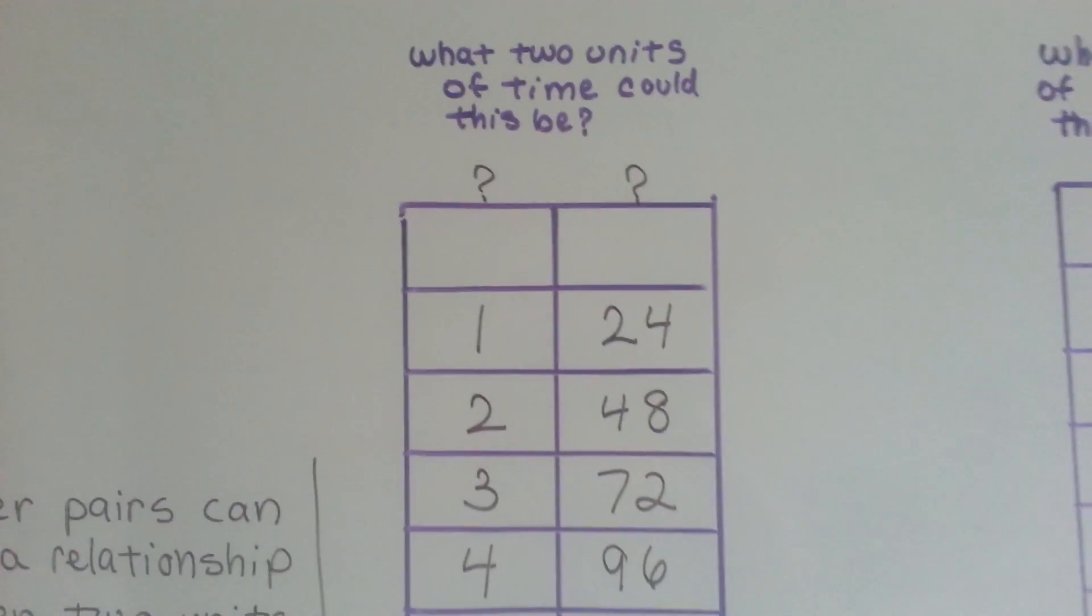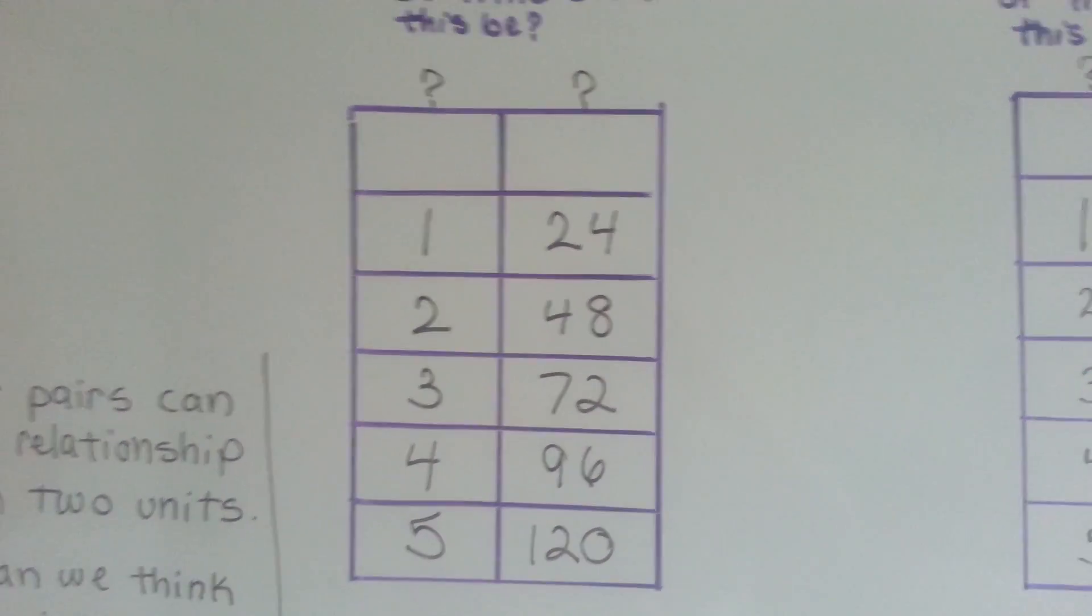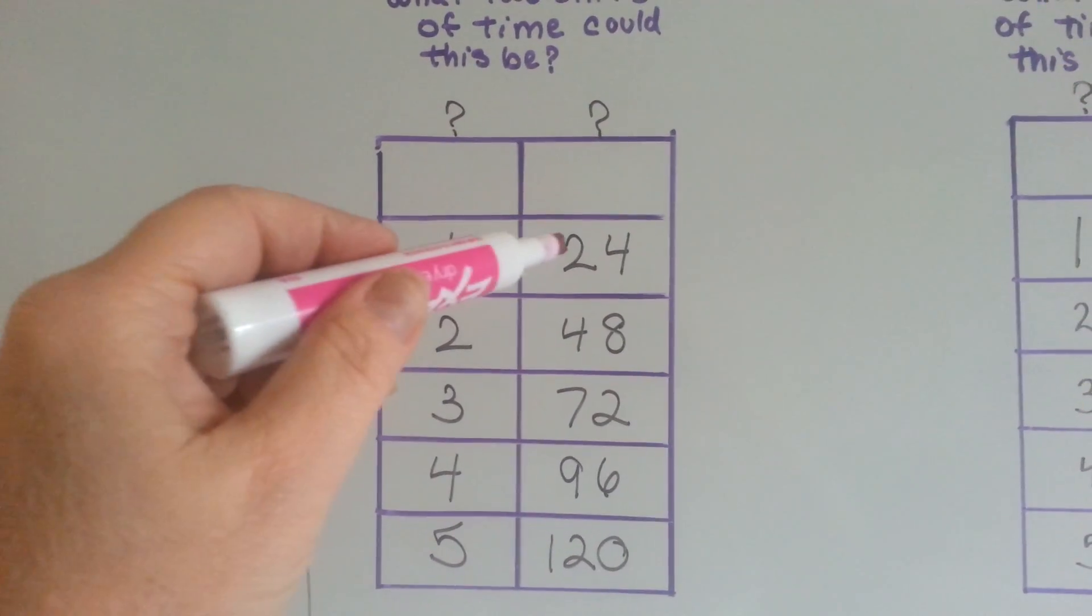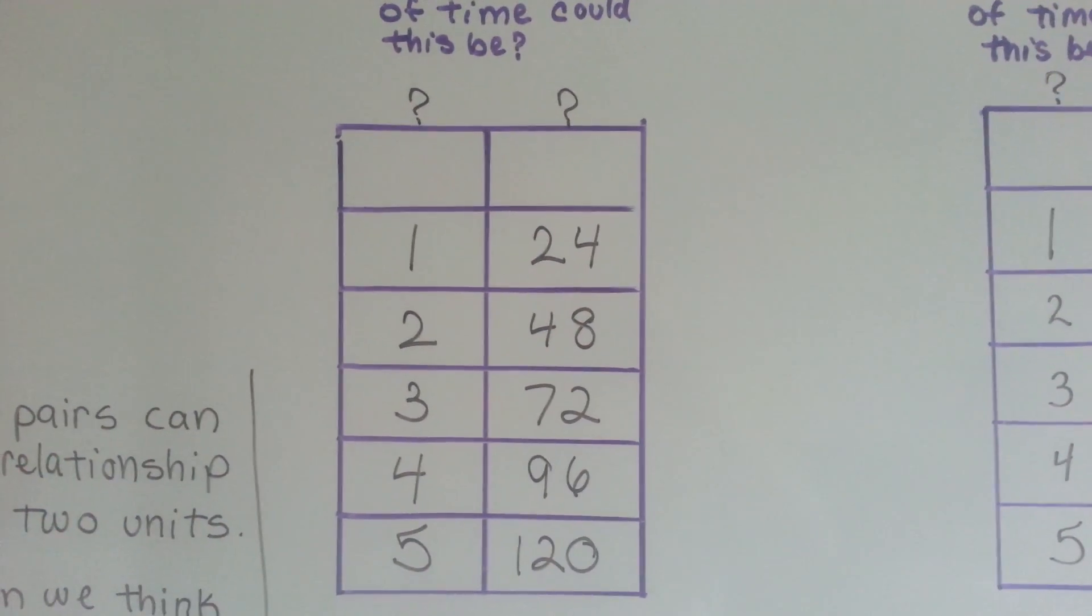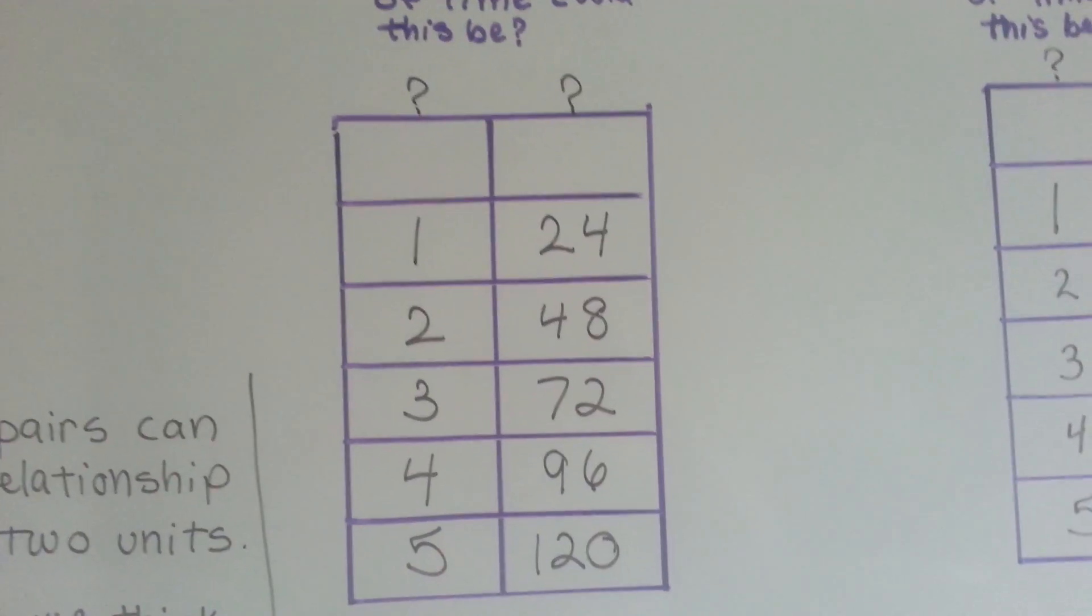Let's see if you can get this one. What two units of time could this be? What could we have one of that would be equal to 24 over time? If you said hours, then you're right.